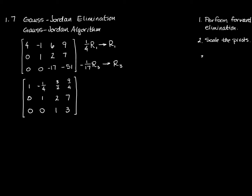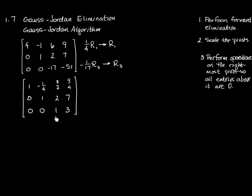Now that my pivots are all ones, step three is to perform elementary row operations on the rightmost pivot so that all entries above it are zero. I need to find a number I can multiply by one so that when I add it to two, the entry in that position becomes zero. Calling that number a: a plus two equals zero, therefore a equals negative two. I'll take every entry in row three, multiply it by negative two, add that to row two, and that becomes my new row two.